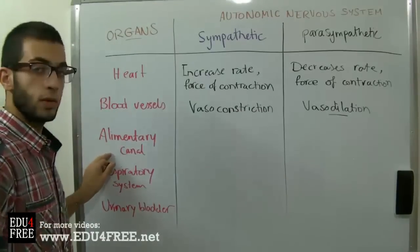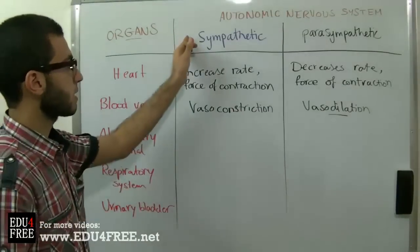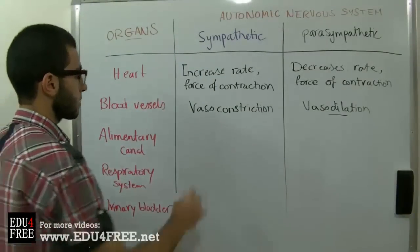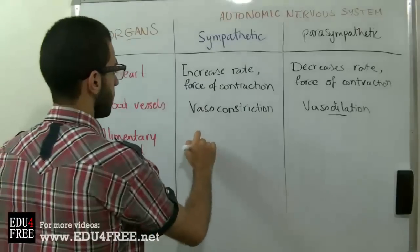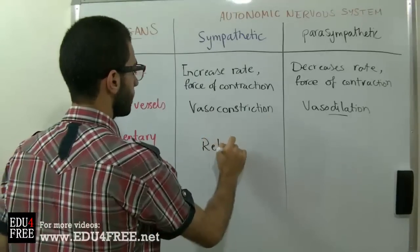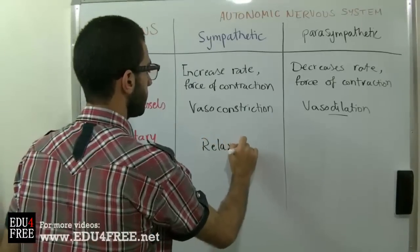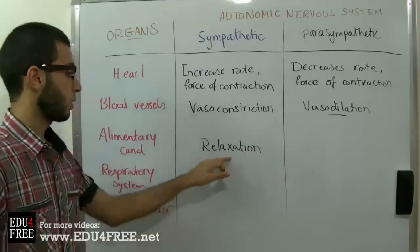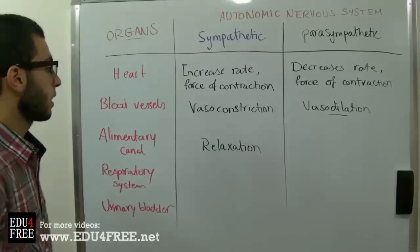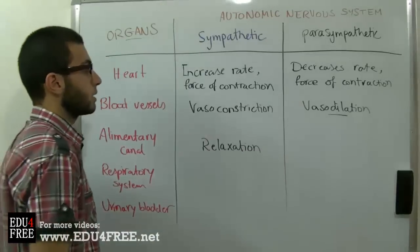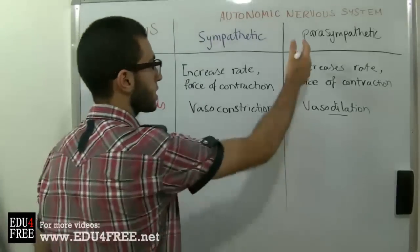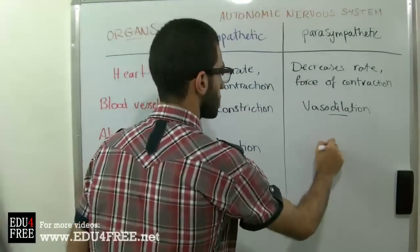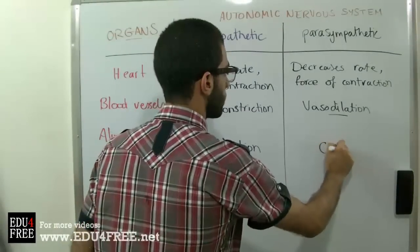Regarding the Alimentary Canal, the effect of the Sympathetic Nervous System is the relaxation of the stomach walls, while the Parasympathetic Nervous System has the opposite effect — contraction of the stomach walls.